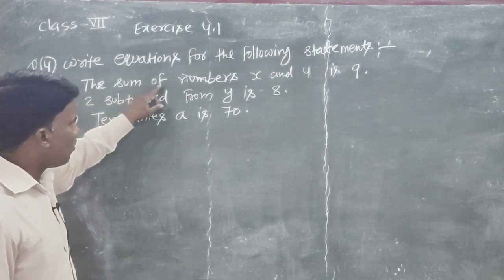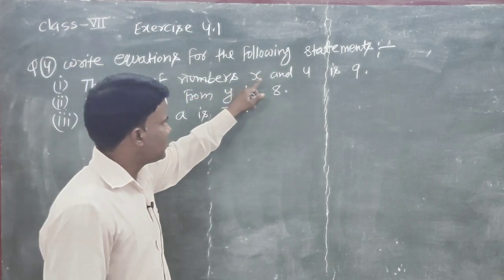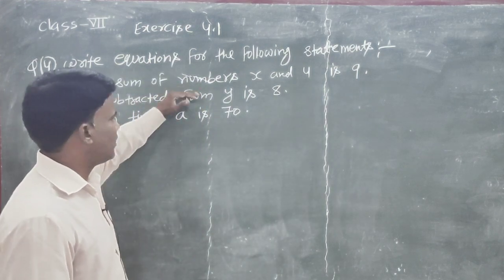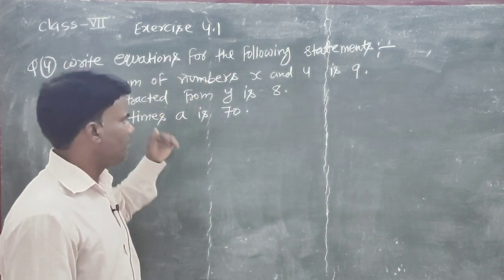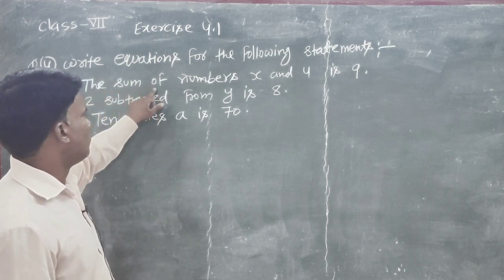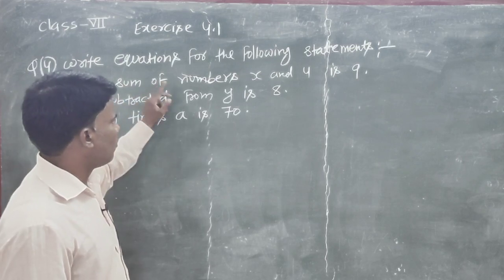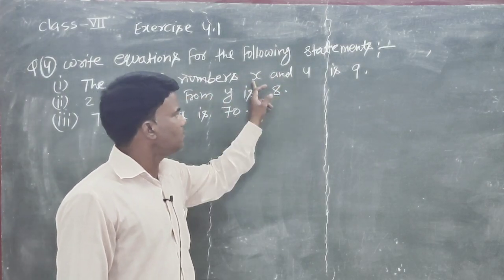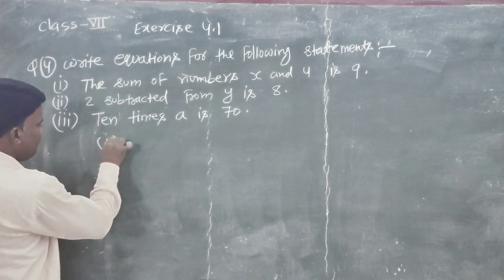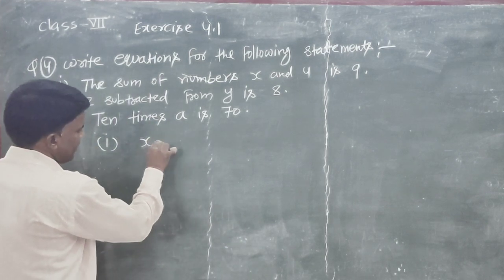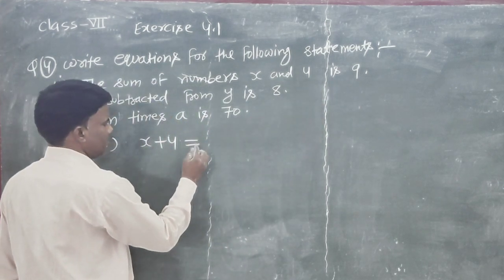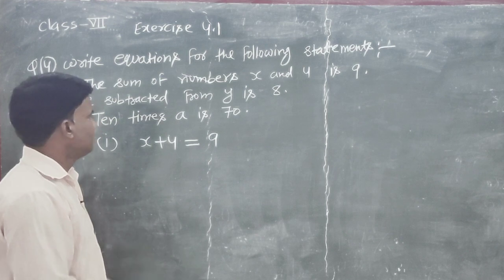The sum of numbers x and 4 is 9. This statement will be converted to an equation. According to the language, the sum of numbers means plus. So x and 4 translates to x plus 4. The result is 9, which means equal to 9.